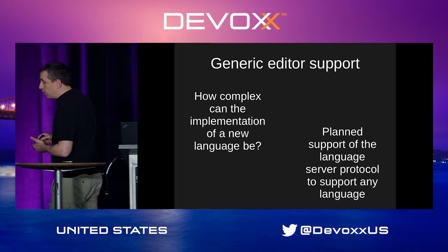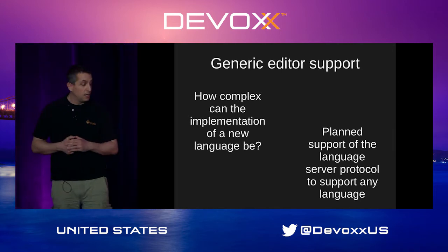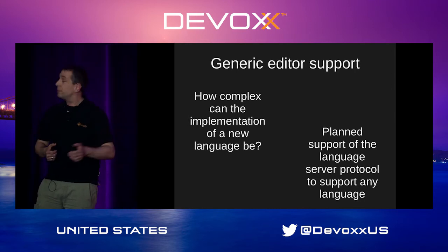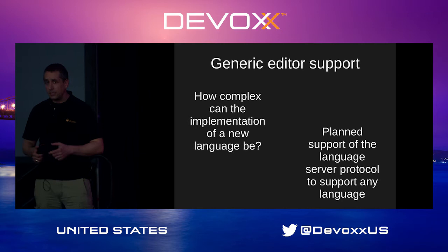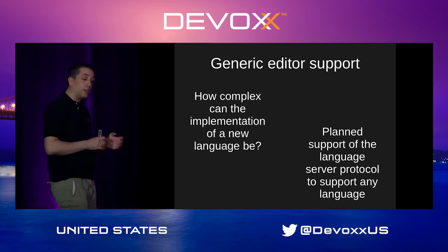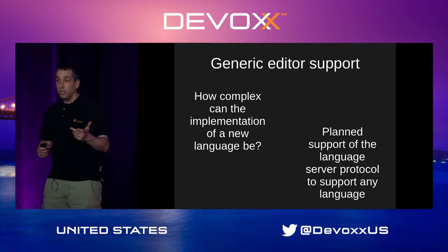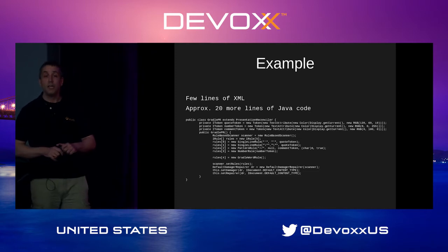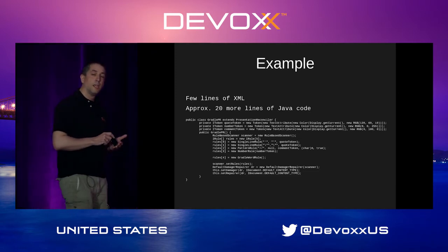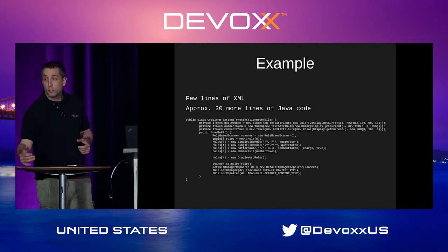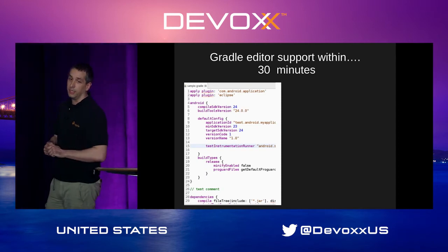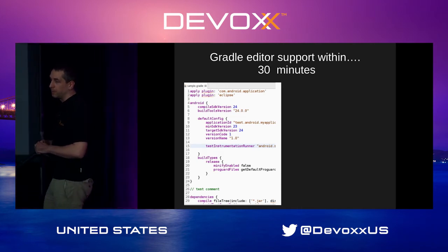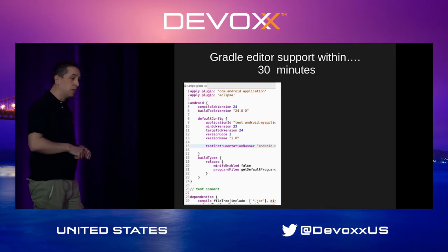Red Hat worked on an easier way of building support for new editors. The old way required you to create a class, register it for a certain file extension, and build all the infrastructure yourself. Now we have generic editor support — it's an extendable editor where you can register a little bit and have support for a new language. For example, if you write a certain code and add about six lines of XML and maybe 20 additional lines listing the keywords to highlight, you end up with a Gradle editor with syntax highlighting — comparable in ease to the old way.